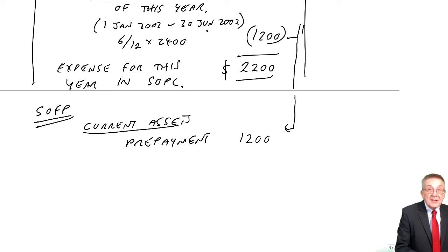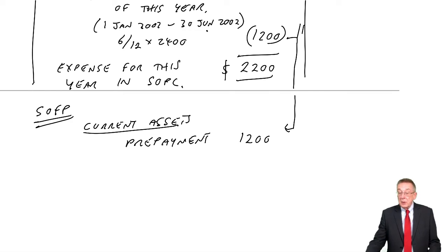There's the figure. And for the prepayment in the Statement of Financial Position, we've already calculated it under Current Assets. The prepayment at the end of the year is $1,200.